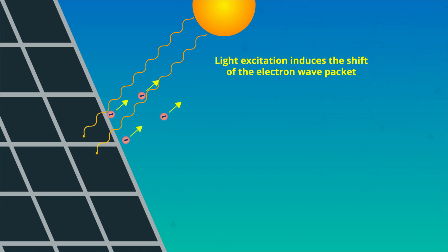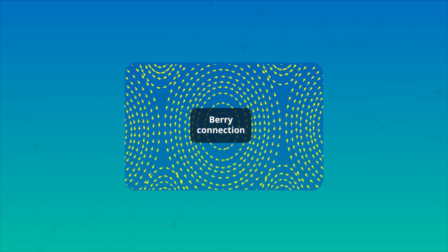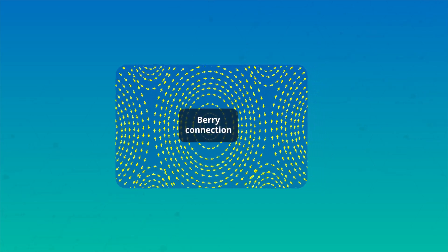Engineering the geometrical phase of electrons in crystals generates shift current, a bulk photovoltaic effect, and non-reciprocal current, a nonlinear transport phenomenon. The Berry connection describes the nonlinear responses of electrons in bulk crystals.